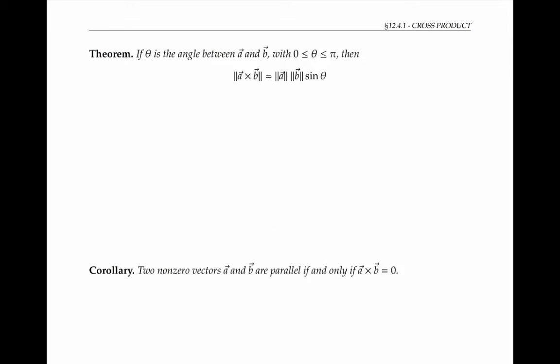Just as dot products have both an algebraic definition in terms of components and a geometric definition in terms of magnitudes and cosine, the same is true for cross products. If the angle between a and b is theta — chosen to be the smaller angle between zero and pi — then the magnitude of a cross b equals the magnitude of a times the magnitude of b times sine of theta. Since theta is between zero and pi, sine theta is positive, so this is plausible.